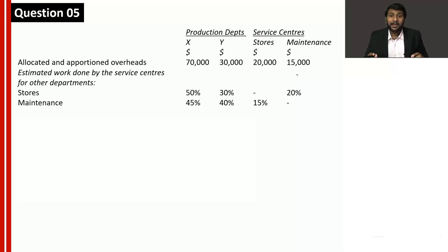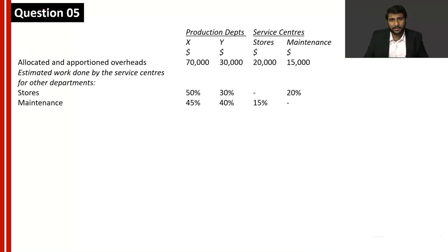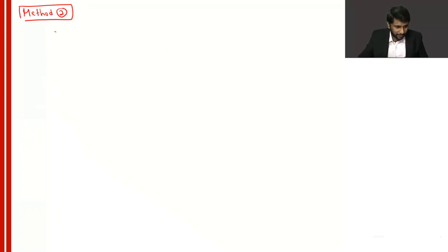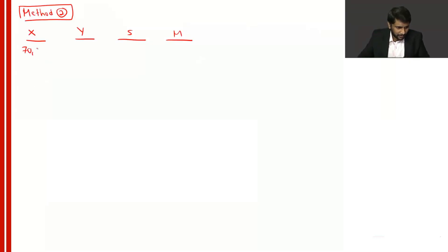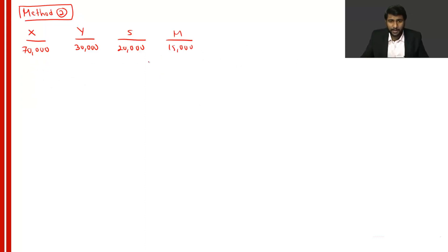We are going to learn how to do reapportionment when you have two service centers providing inter-department services — meaning one service department provides service for another. In this method, the equation method, you have to construct two equations. The departments are: Department X (70,000), Department Y (30,000), Stores (20,000), and Maintenance (15,000). We will make Stores and Maintenance zero using the equation method.